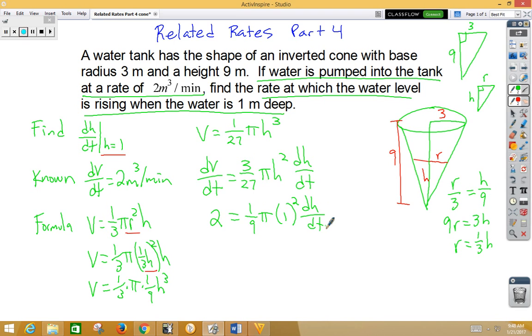If we kill off the fraction, multiply the 9 to the other side, we get 18 = π dh/dt. So, dh/dt is 18/π, and our units are meters per minute.